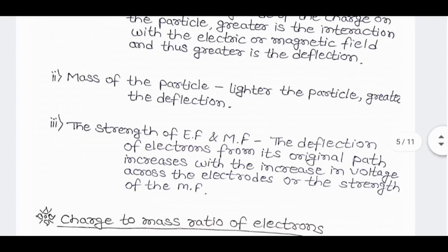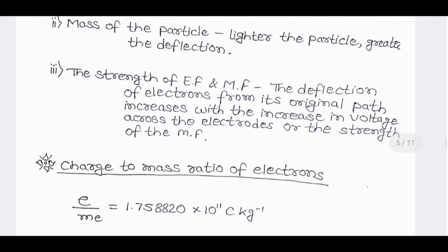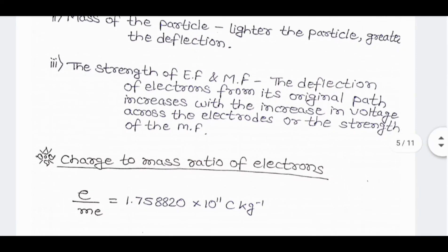Strength of electric and magnetic field: EF means electric field and MF means magnetic field. The deflection of electron from its original path increases with the increase in the voltage across the electrode or the strength of the magnetic field.